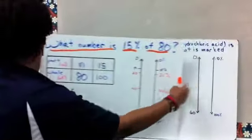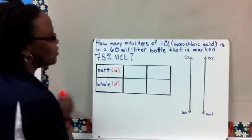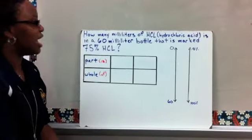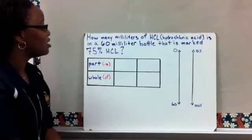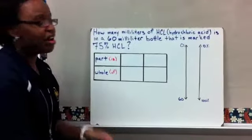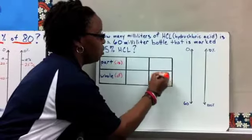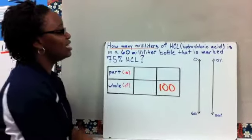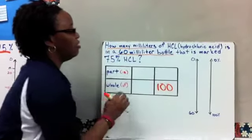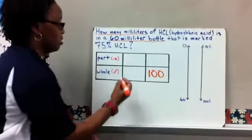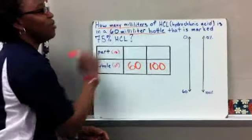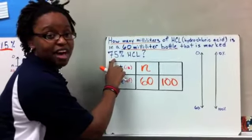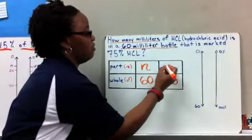Let's move on to example number three. A lot of times our problems are easy when we just got the numbers, but we've got to do a little bit more evaluating when we've got our word problems. So number three reads, how many milliliters of HCl, hydrochloric acid, is in a 60 milliliter bottle that is marked 75% HCl? So before I even start, I know that I'm looking for a percent. I'm going to go ahead and fill in my whole 100%. How many milliliters of HCl in a 60 milliliter bottle? That tells me that the whole bottle is 60 milliliters. So I'm going to go ahead and fill in 60 for my whole, and since I don't know how many milliliters are in that part, I'm going to use my N there. My bottle is marked 75% HCl. I know that my percent has to be out of 100.